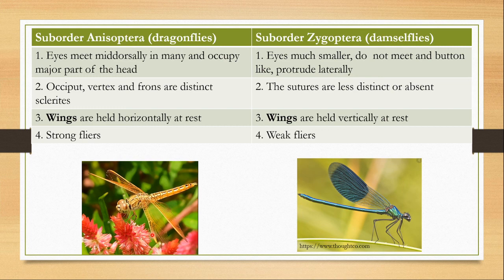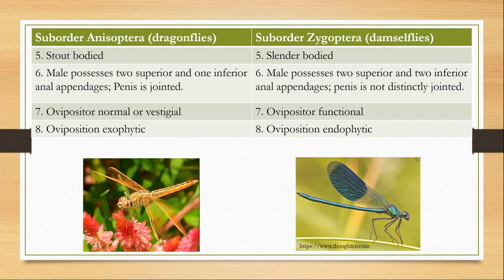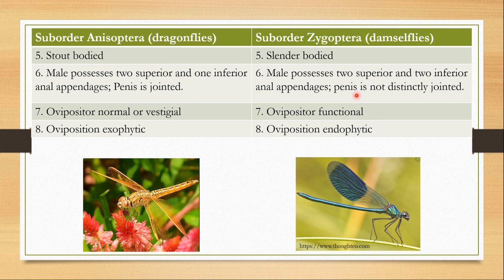Dragonflies can fly very fast and hunt easily in the sky. Their body is stout, whereas damselflies have a more slender body. In dragonflies, the male possesses two superior and one inferior anal appendages and the penis is not distinctly jointed. In damselflies, the male possesses two superior and two inferior anal appendages and the penis is jointed.